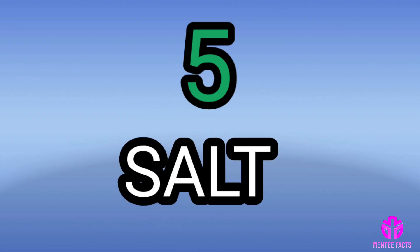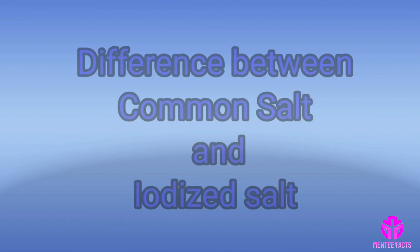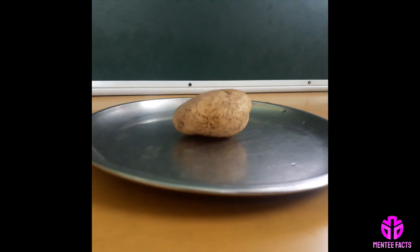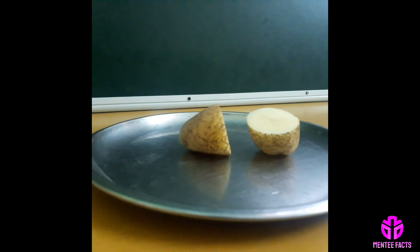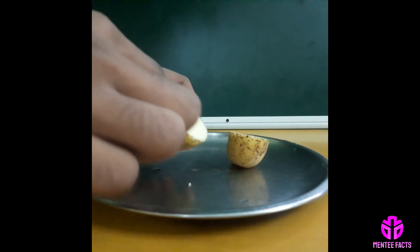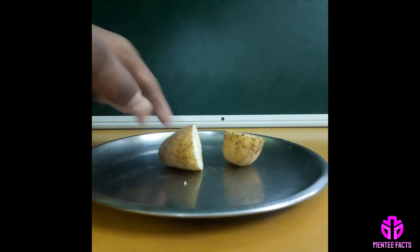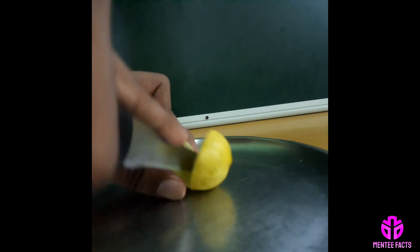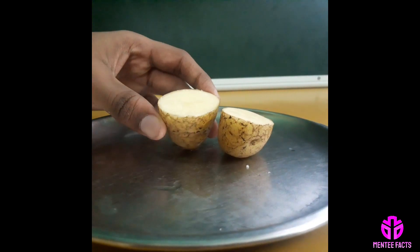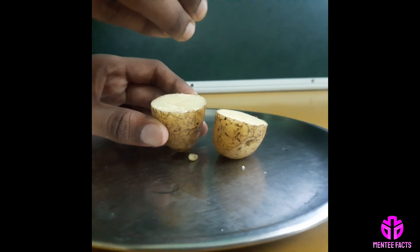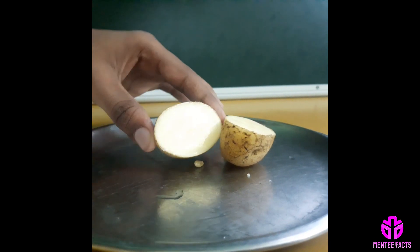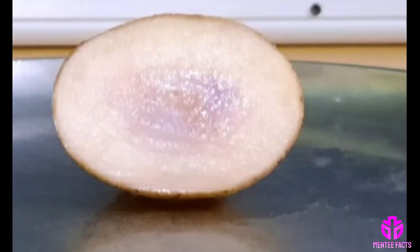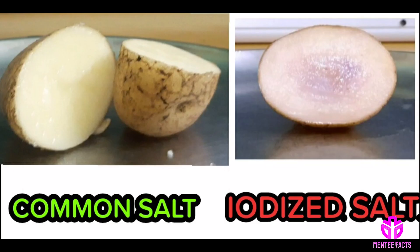Difference between common salt and iodized salt: cut a piece of potato and add salt, then wait for a minute. Add two drops of lemon juice. With iodized salt, a blue color will develop on the potato. In the case of common salt, there will be no blue color.